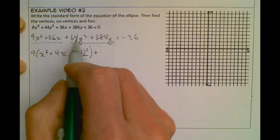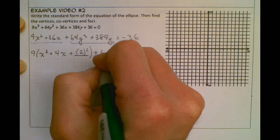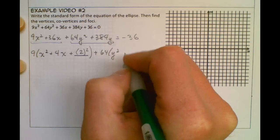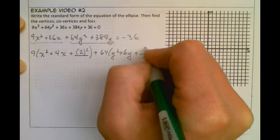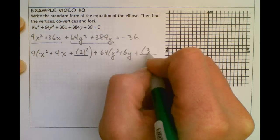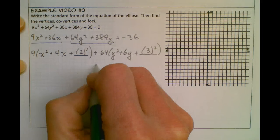And then over here I'm going to factor 64 out of both y terms, so that's 64 times (y² + 6y) plus, I'm going to put my placeholder in there, half of 6 is 3, so that's 3 squared.